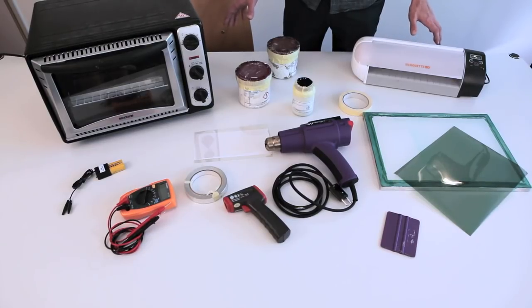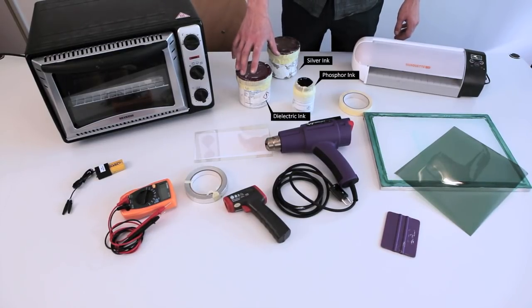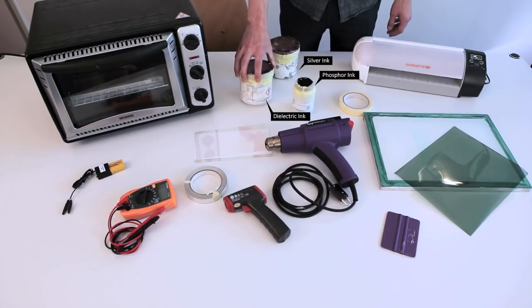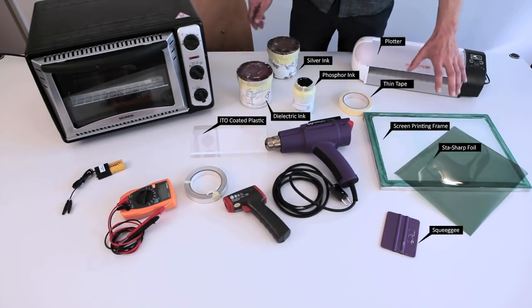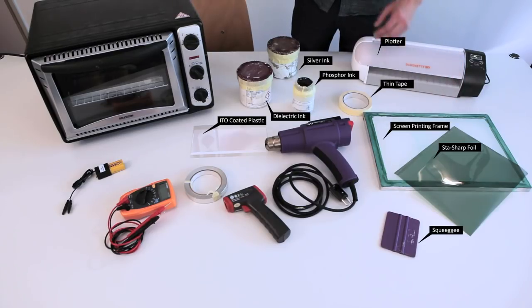These are the materials we'll be using for the printing. We have our inks, our ITO coated plastic, our screen printing materials, our heating and drying materials, and the electronics.